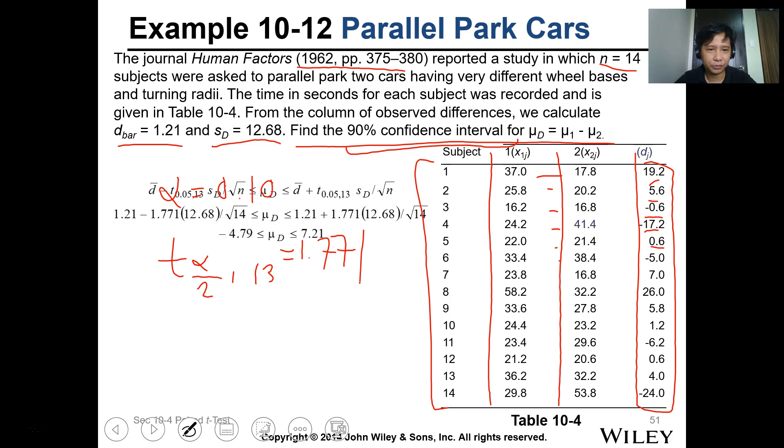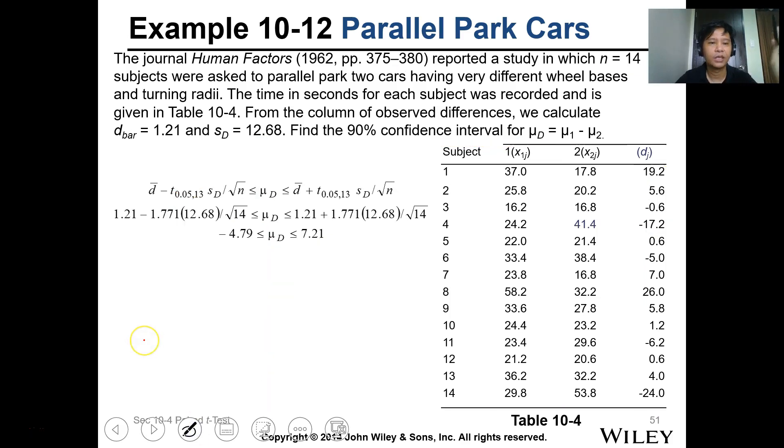So we know the d bar, we got the t-value which is 1.77. The sd is given, and n is given as 14. So you can just substitute everything and you have this data.